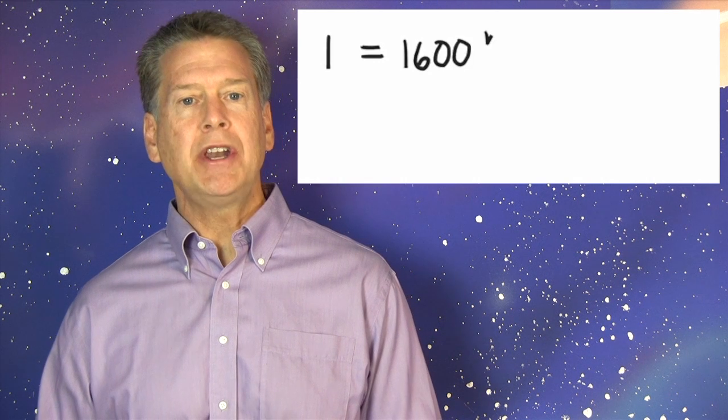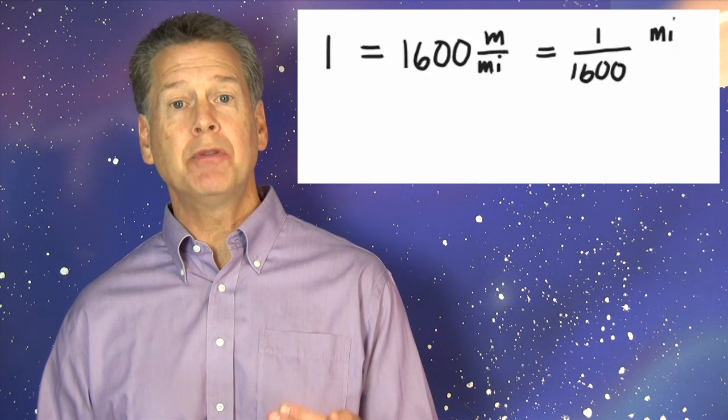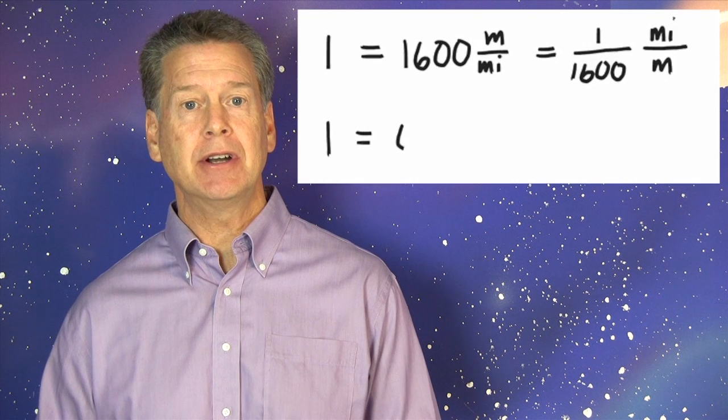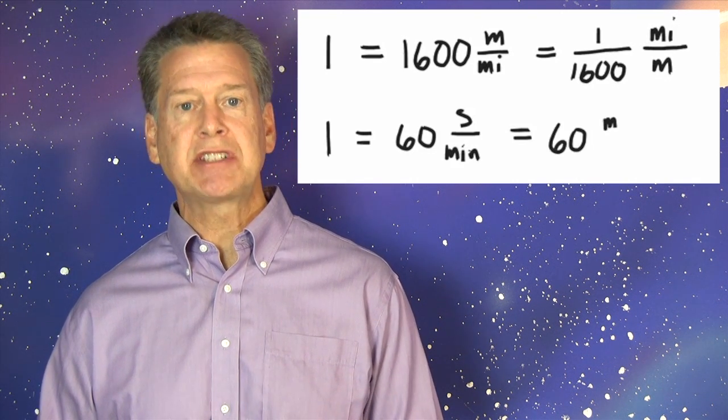We need to multiply by the number 1 several times so that the speed stays the same but the units change. Here are the forms of 1 that we need: 1 equals 1,600 meters per mile, which is 1 over 1,600 miles per meter. 1 equals 60 seconds per minute, and 1 equals 60 minutes per hour.